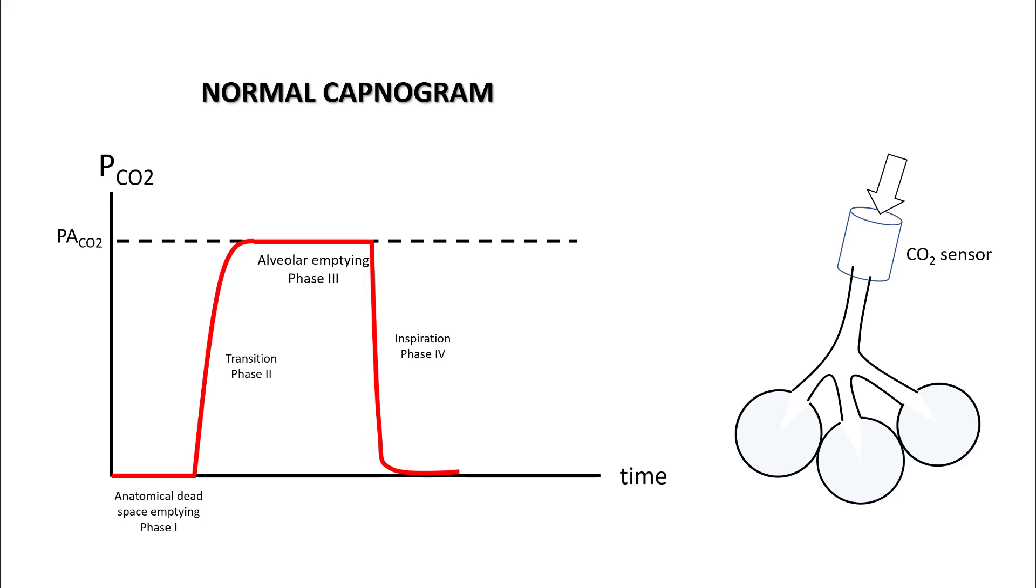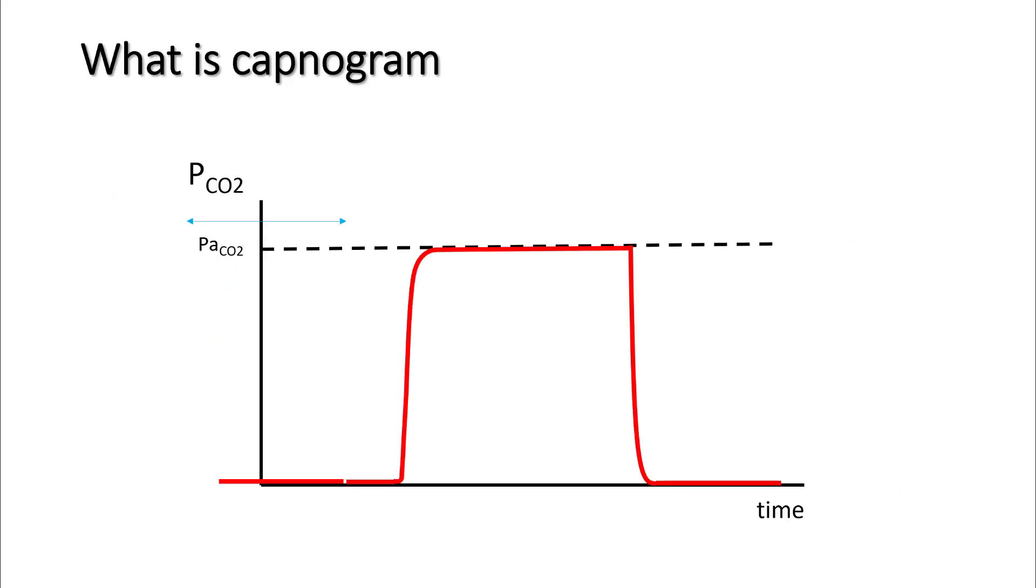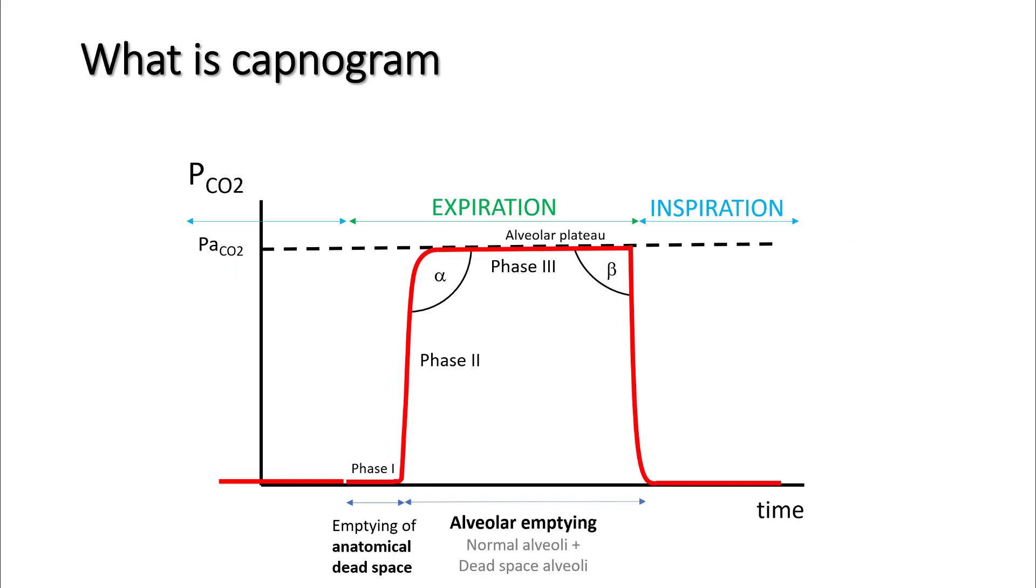Let's understand the different parts of the capnogram again. First part is your anatomical dead space emptying—that's phase one. Phase two is the transition between anatomical dead space emptying and alveolar emptying. Alpha is the angle between phase two and phase three. You reach an alveolar plateau in a normal person that equals alveolar CO2, which also equals arterial CO2.